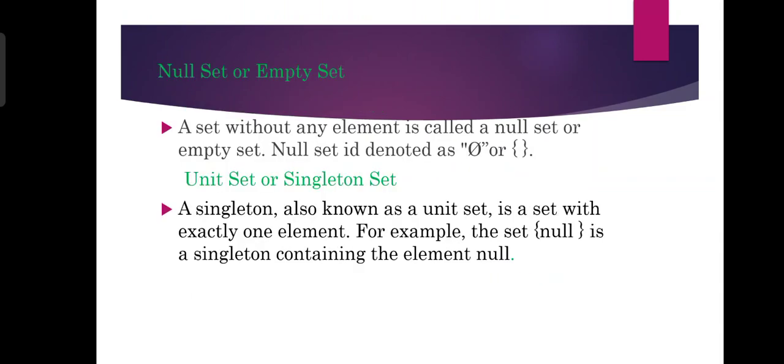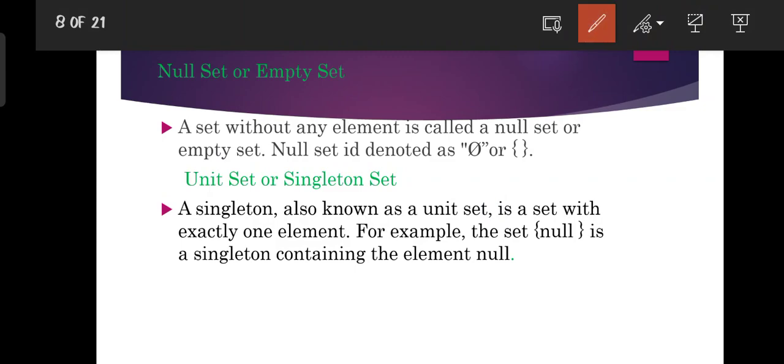A null set or empty set is a set without any element. It is represented by the symbol φ (phi) or by empty curly brackets {}. This symbol represents a set with no elements.